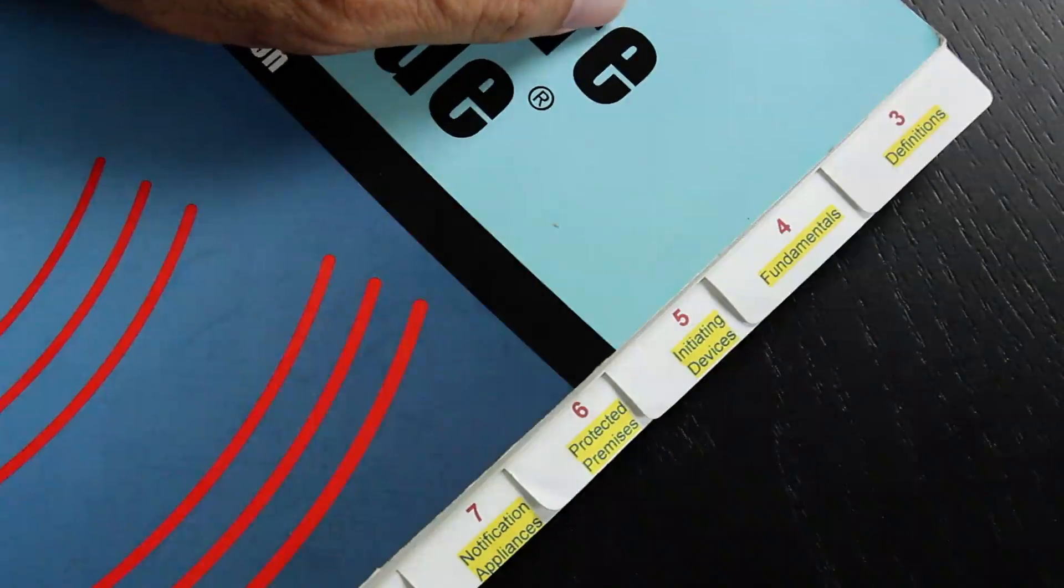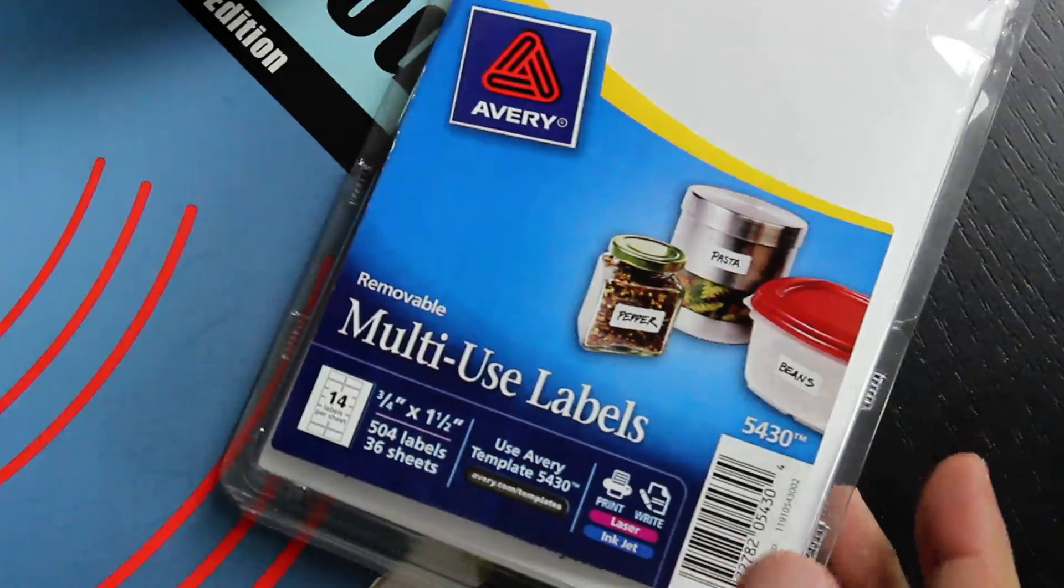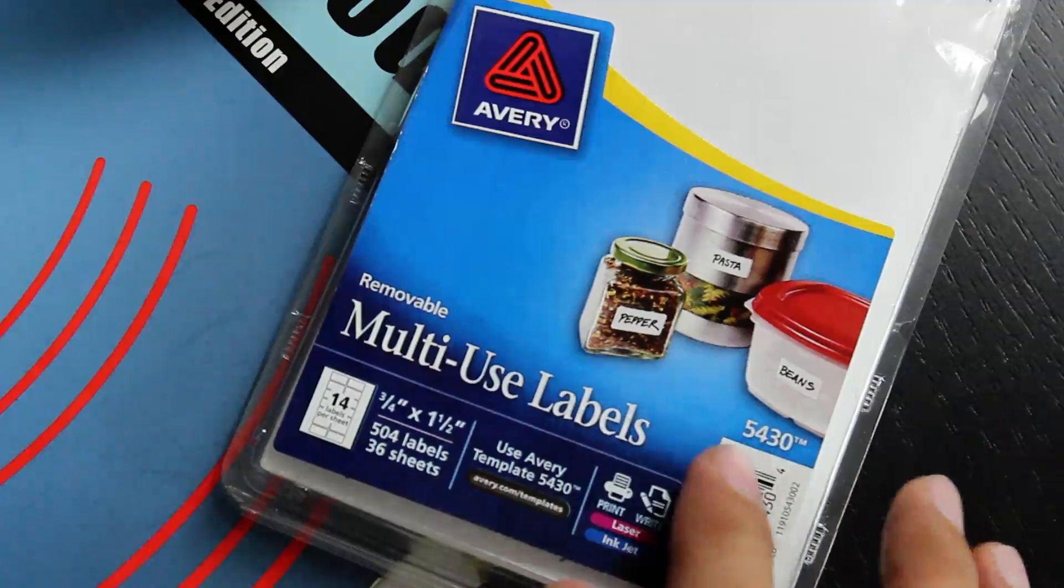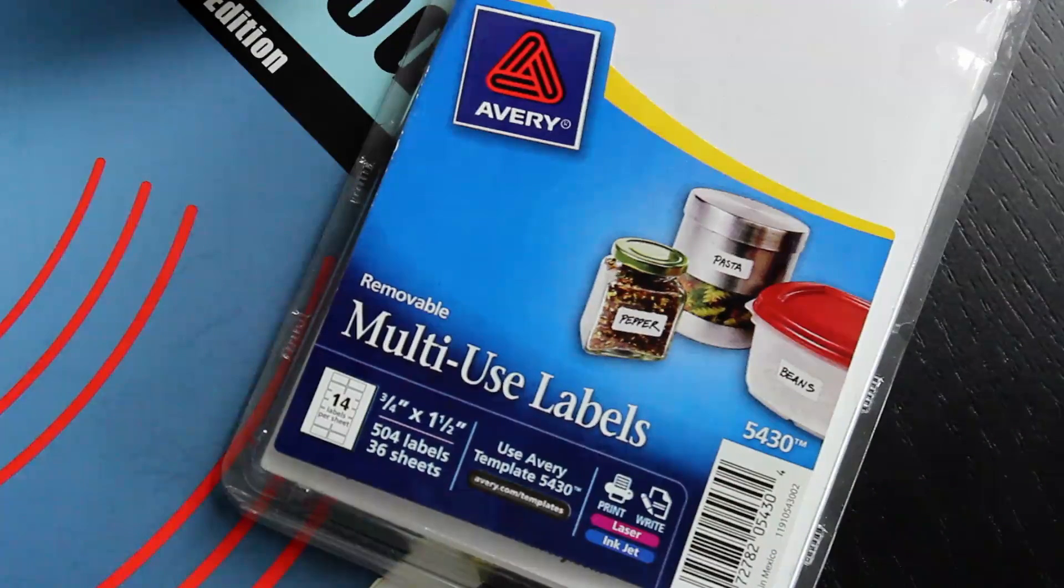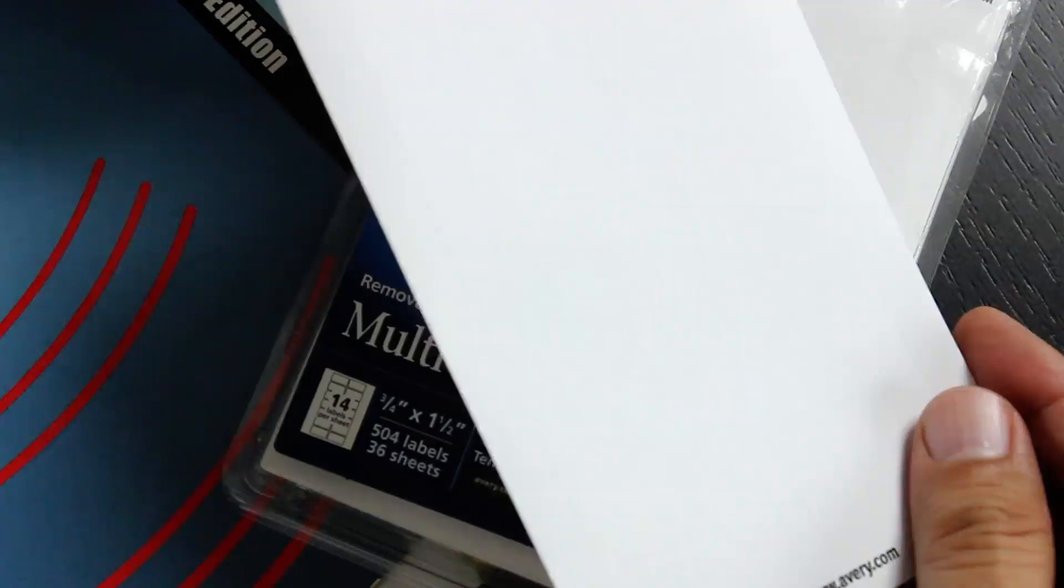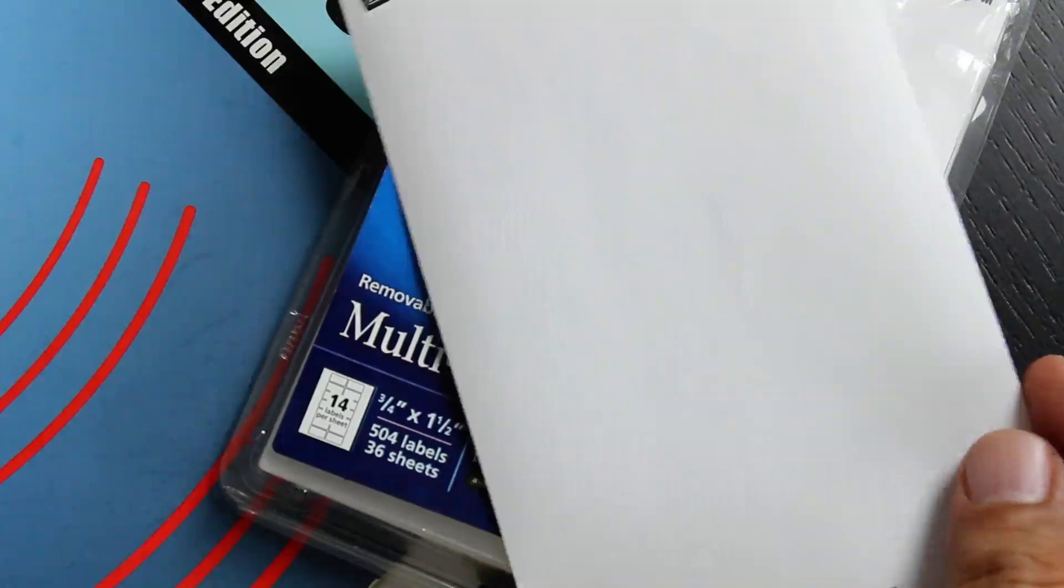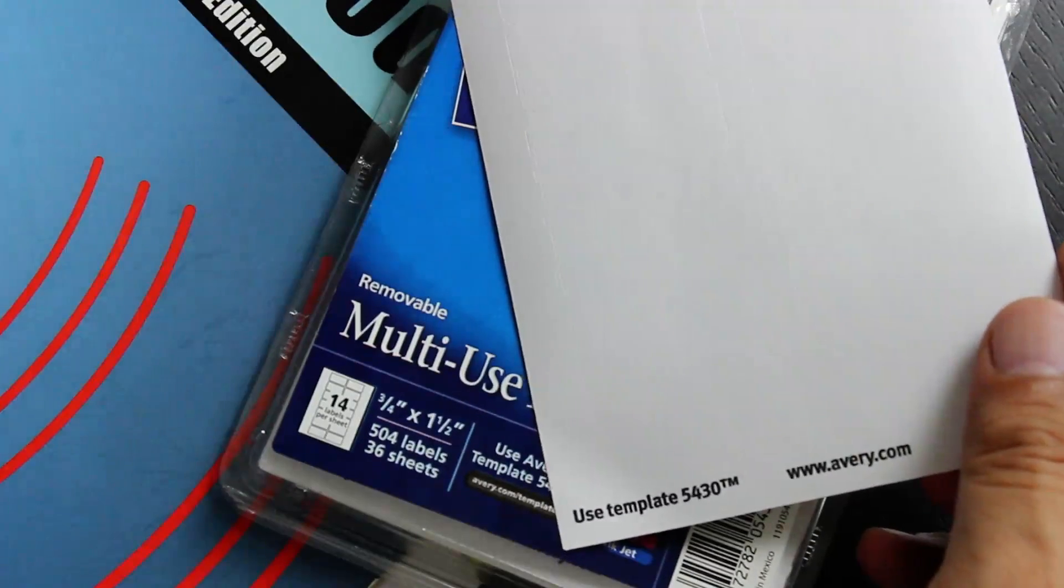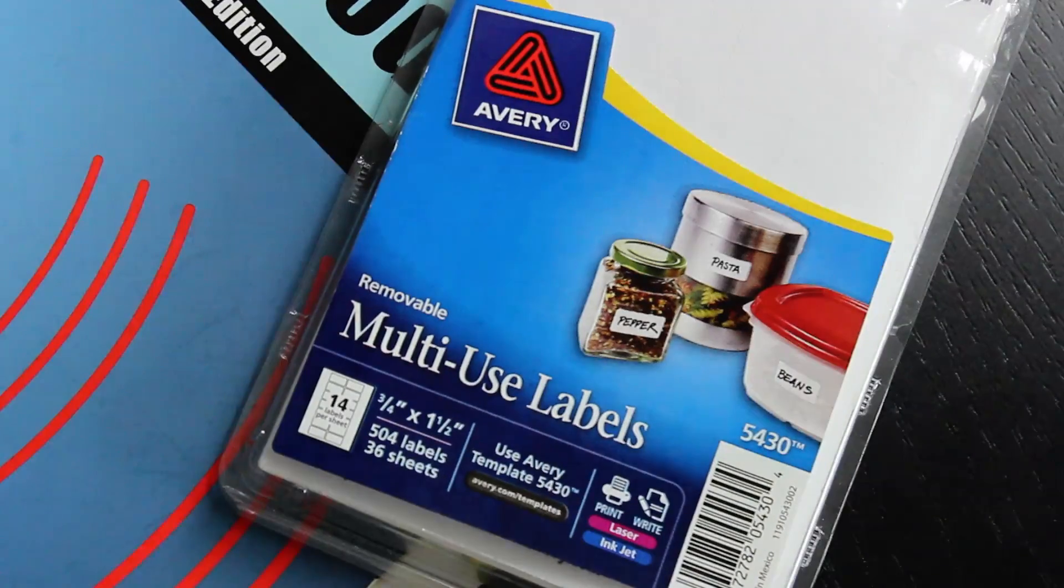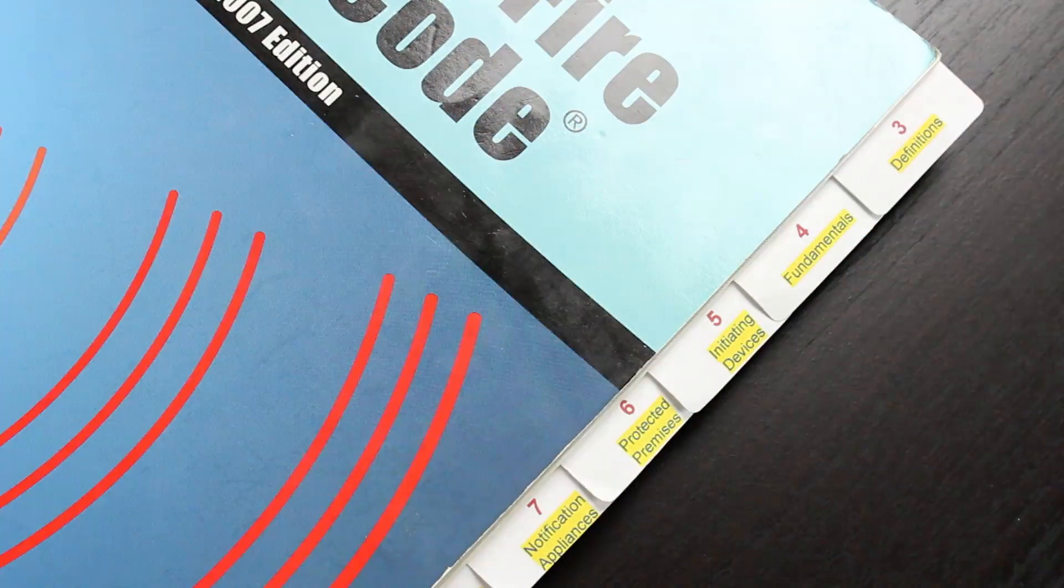See what I used for my tabs? I used a label from Avery. This is Avery model number 5430. It comes—here it is—with fourteen labels on a sheet. This is how I divided my book.